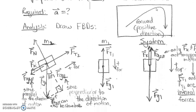We're required to find the acceleration, and we want to draw free body diagrams, recognizing that the whole system is going to accelerate forward. If we draw the free body diagram of mass one — the hanging mass — it's the easiest one to analyze. The only forces acting on it are the force of gravity going downwards and the force of tension acting upwards. Because it's accelerating forwards, gravity is slightly larger than tension, and we identify the forward direction as positive, which is downwards.